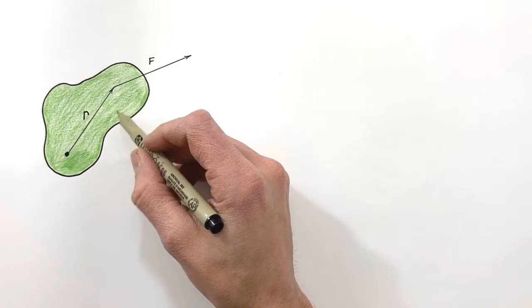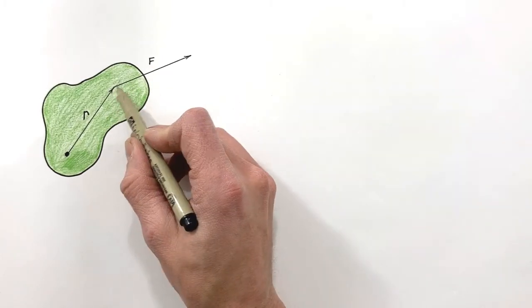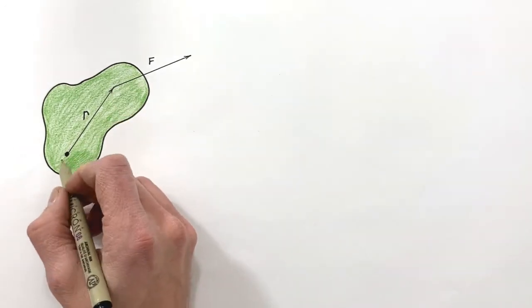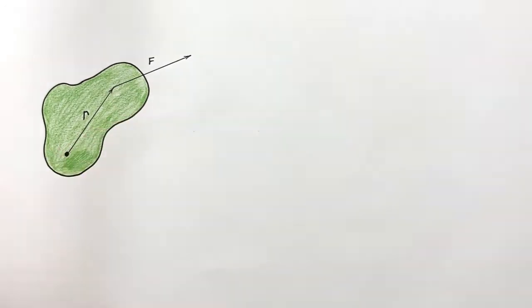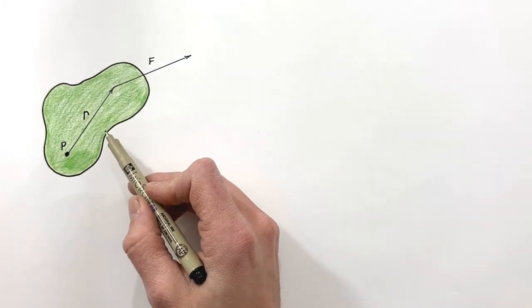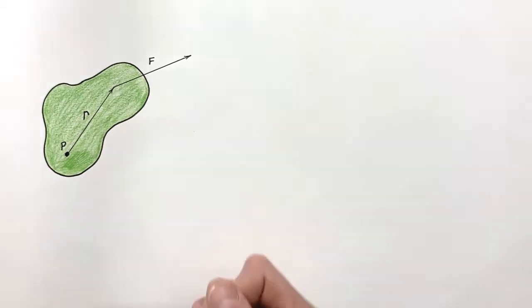So what we have here is some object, and we're going to put a force F on this object at a distance R away from some pivot point. We're going to call this pivot point P. So what I want to do is go through and actually work out the magnitude of torque acting on this object.